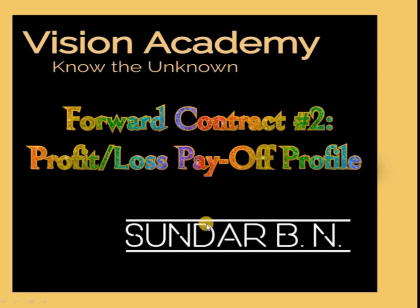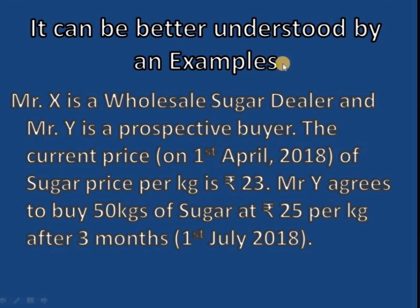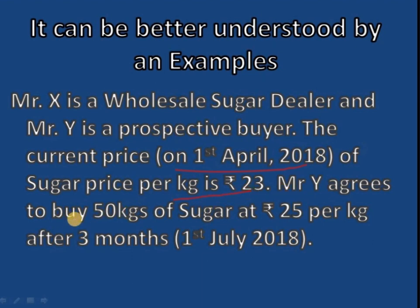It is better understood by a situation. We have a situation here. Mr. X is a wholesale sugar dealer and Mr. Y is a prospective buyer. The current price of sugar on 1st April 2018 was 23 rupees per kg, and Mr. Y agrees to buy 50 kg of sugar at 25 rupees per kg after 3 months — exactly on 1st July 2018.